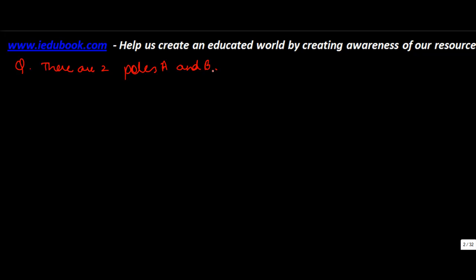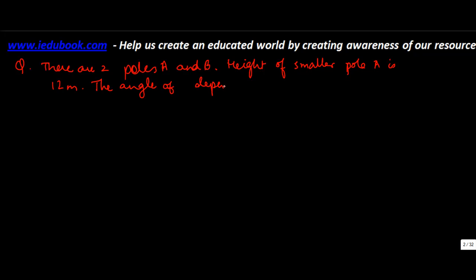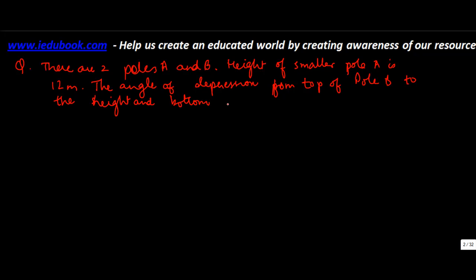There are two poles A and B. The height of the smaller pole A is 12 meters. The angle of depression from the top of pole B to the top and bottom of pole A are 30 degrees and 60 degrees respectively. Find the height of pole B.